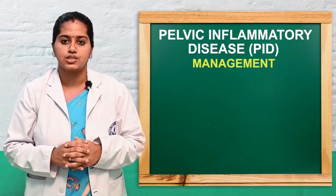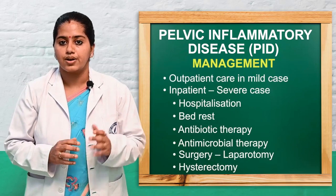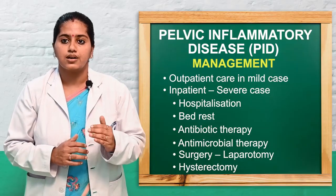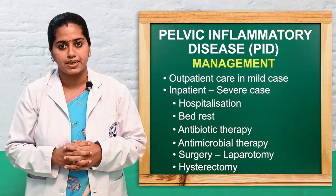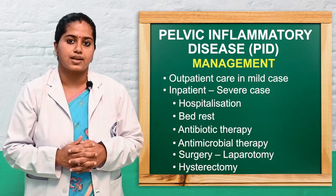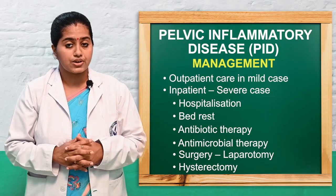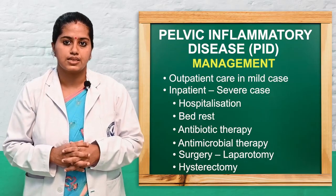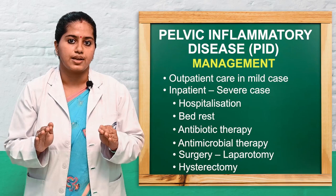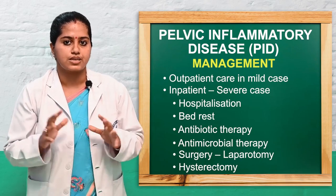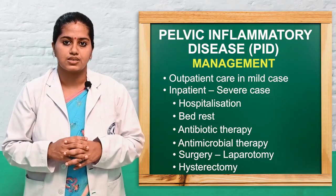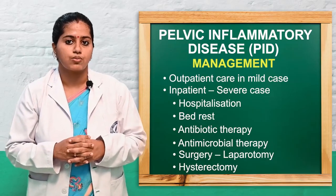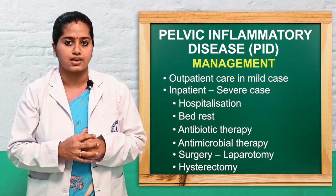Management: outpatient care with antibiotics can be given for mild cases. For severe symptoms, hospitalization and complete bed rest are required. Antibiotic administration includes gentamicin, clindamycin, ceftriaxone, cefoxitin, and metronidazole therapy. If the abscess or infection does not reduce with antibiotic therapy, surgical procedures are performed — laparotomy, salpingectomy, oophorectomy. In severe conditions, hysterectomy — partial or complete removal of the uterus — may be done.